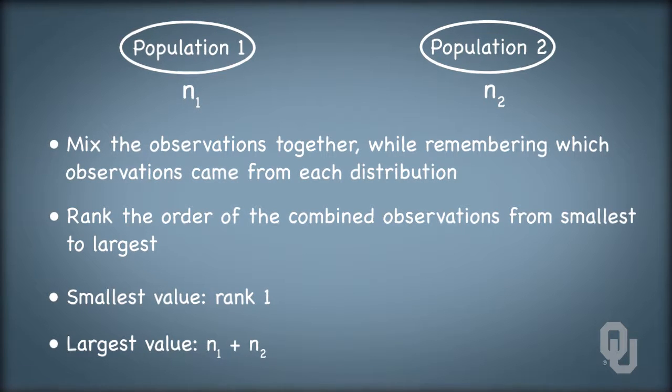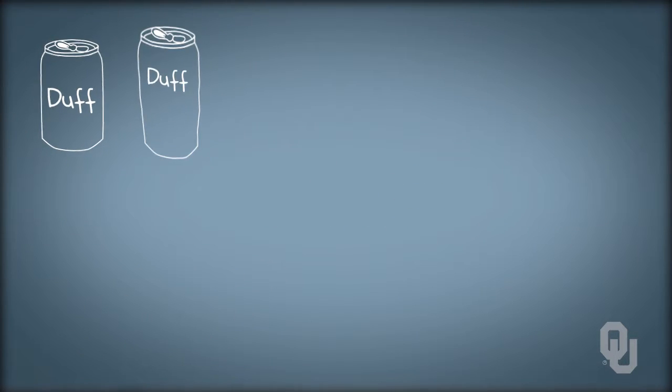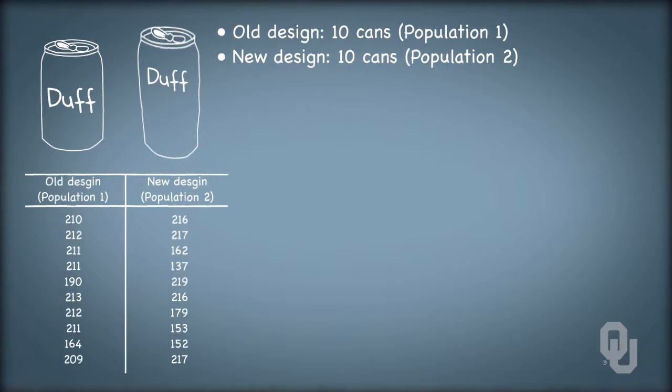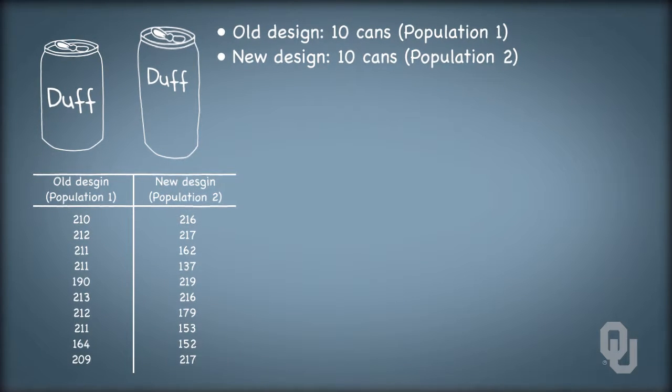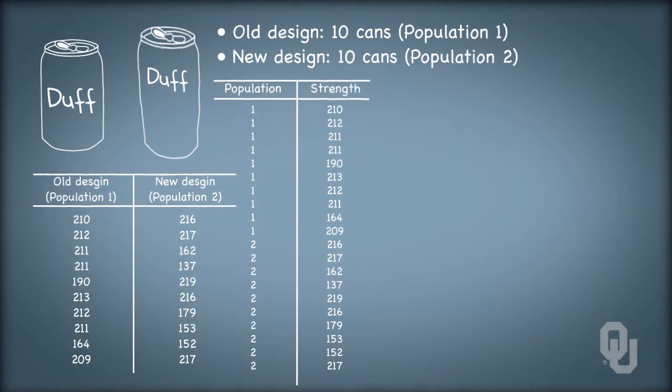Let's take a look at an example from Duff Brewery. Say that you're studying the bursting strength in PSI of two different aluminum can designs. You collect ten cans from the old design, call it population one, and ten cans from the new design, call it population two. The bursting strength was measured as the pressure at which cans filled with water burst when pressurized. So we have twenty total observations, and we combine them together, keeping a marker for the cans that belong to the old design and the new design.